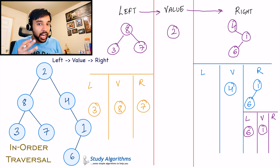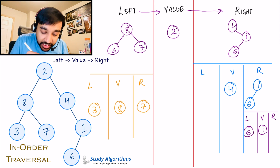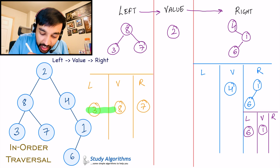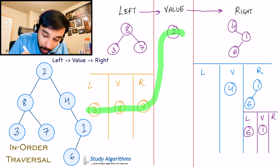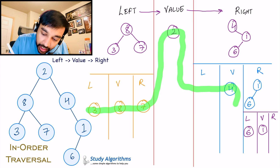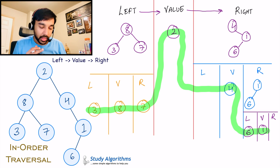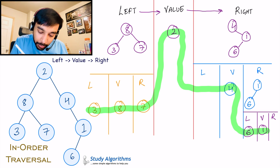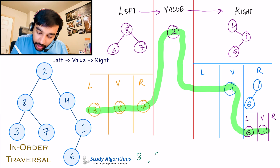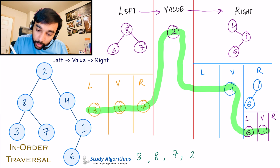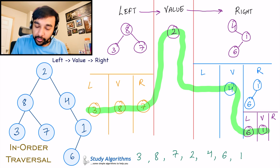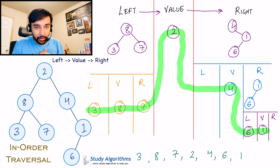So if someone asks you what is the in-order traversal of this binary tree, this is how you traverse it: 3, 8, 7, 2, then 4, then 6, then 1. Thus your answer is 3, 8, 7, 2, 4, 6, and ultimately 1. And this is how you perform an in-order traversal of a binary tree.